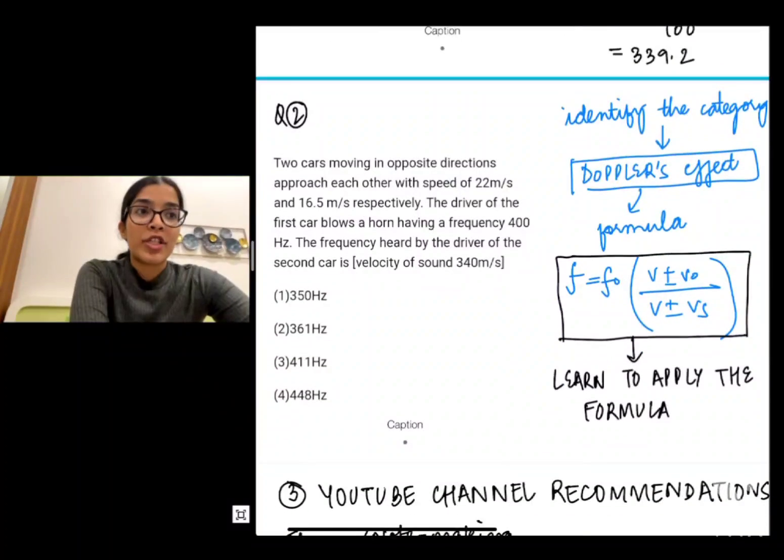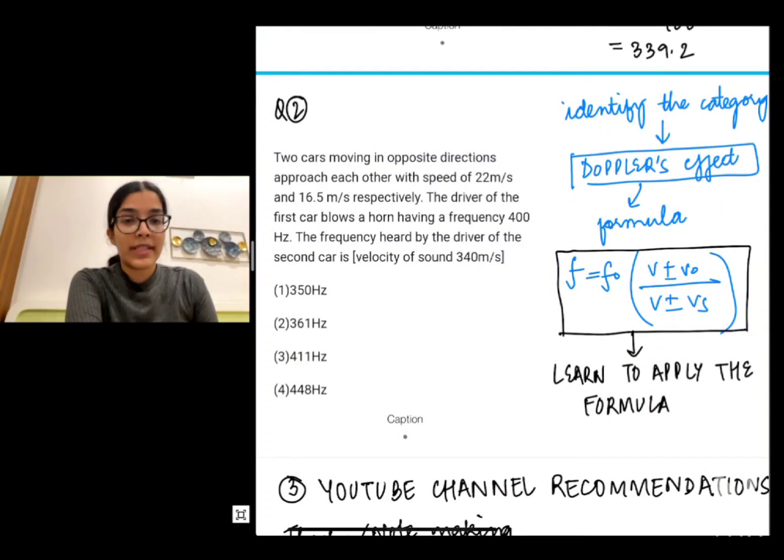Now I'll take up another question as well. Firstly, how do you start off? You identify the category. This falls into the category of Doppler's effect. For Doppler's effect there's only one formula which is f = f₀(V ± V₀)/(V ± Vₛ).